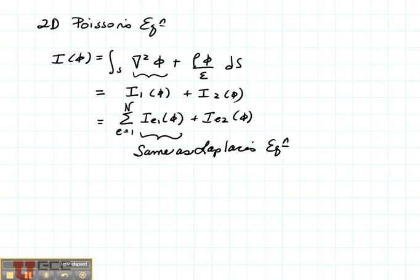Now let's continue our solution of the 2D Poisson's equation. Our functional is given as the sum of the Laplacian and this constant integrated over the surface. That's effectively two different functionals, I1 and I2.